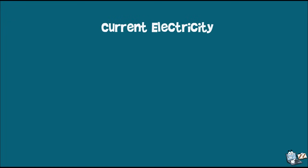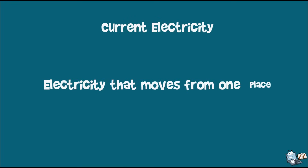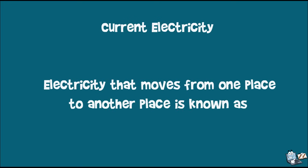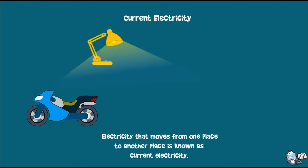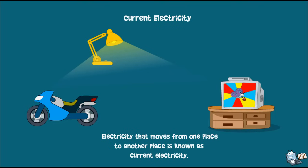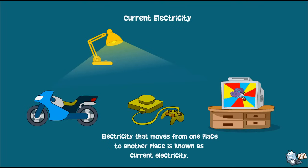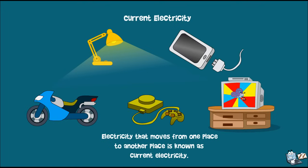Current electricity: electricity that moves from one place to another is known as current electricity. Examples of current electricity are starting a motorbike, turning on a light, watching TV, playing video games, charging a cell phone, and many more.